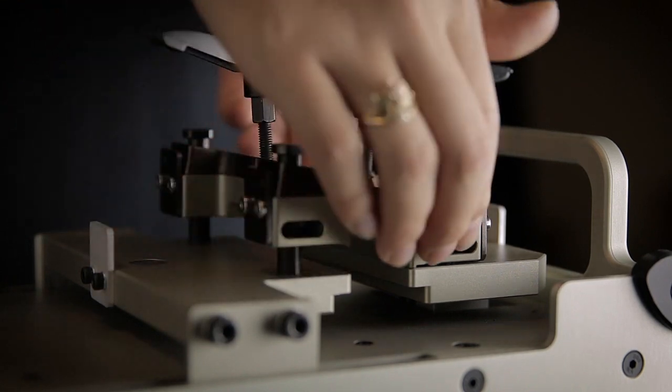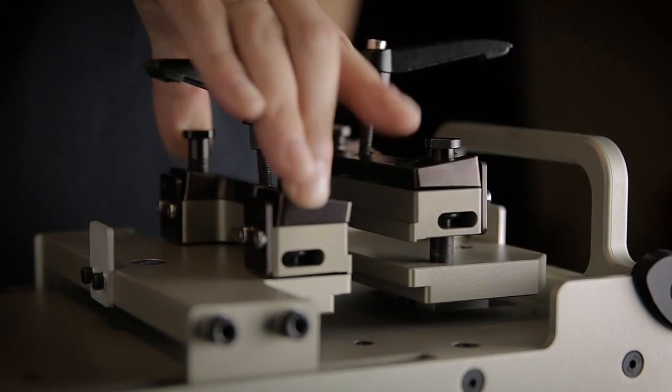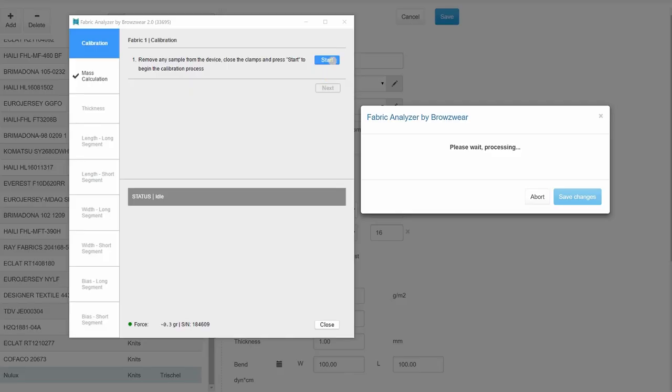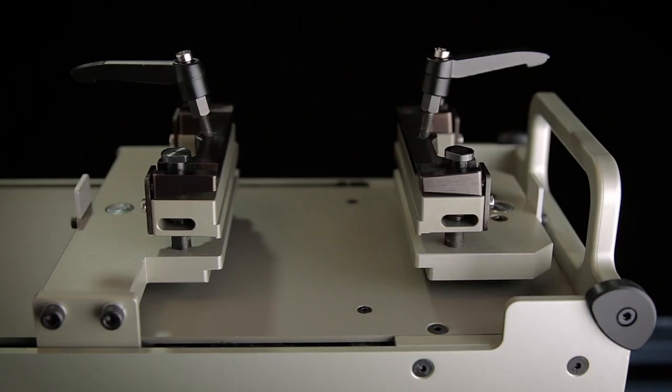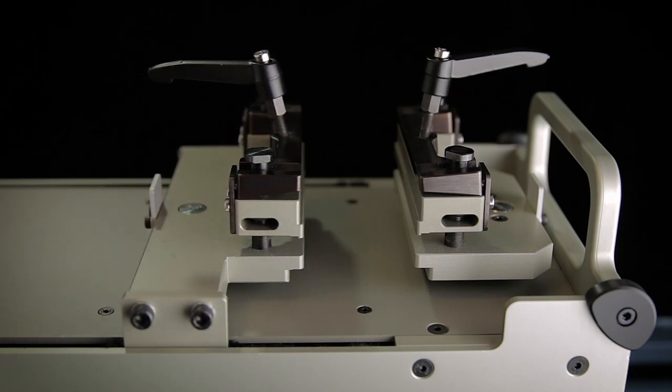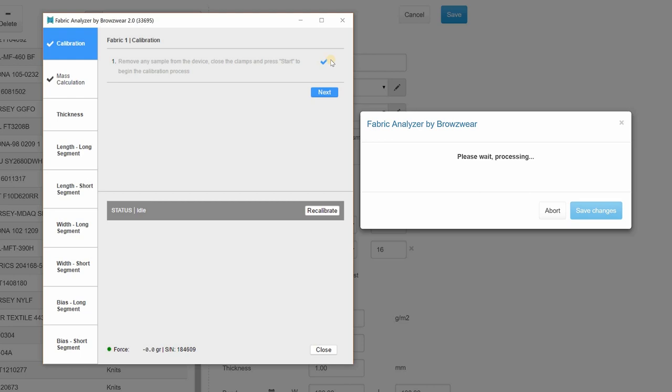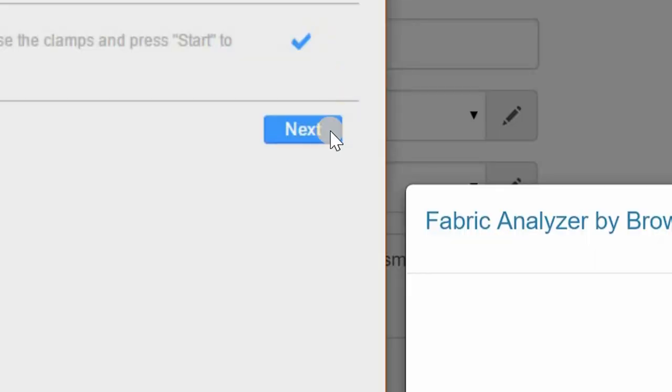Make sure the clamps are either both up or both down, and there's nothing obstructing the path of the movable arm on the FAB. To calibrate, hit Start. The process will begin. The movable arm will move towards the fixed arm and back and forth a few times. You'll know the process is complete when the next button has appeared in the Fabric Analyzer window on your screen.